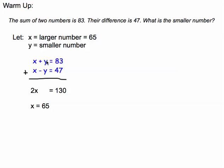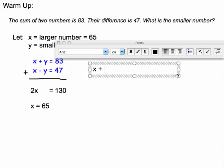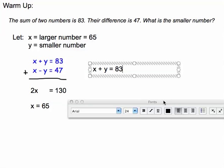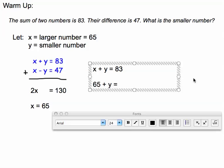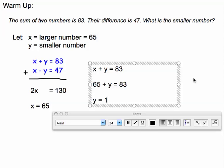I have to choose one of the two equations. Let's choose the top one—it seems easy to use. I'm going to take x plus y equals 83 and substitute in x where I see it in the equation. So I get 65 plus y equals 83, and when I subtract 65 from both sides, I get y equals 18.